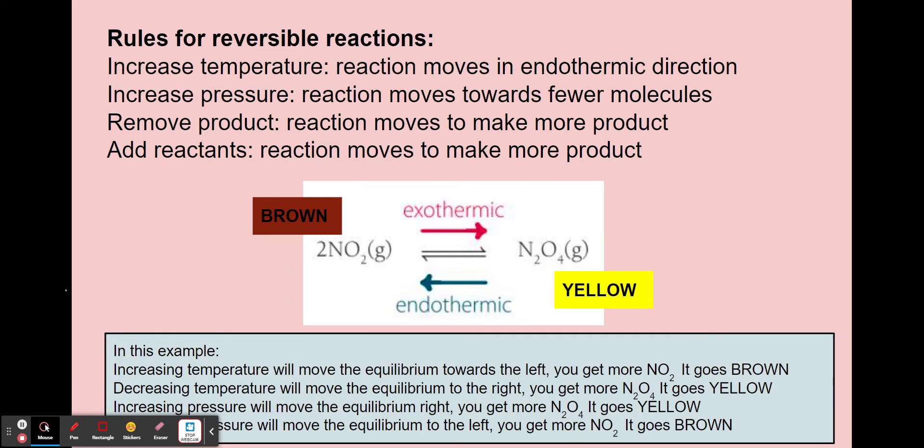Again, in this example here, which is taken from your textbook, you've got brown and yellow substances. So you would see changes dependent on where the equilibrium position is.